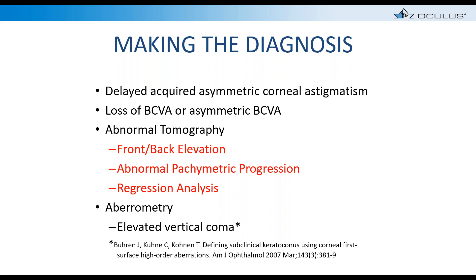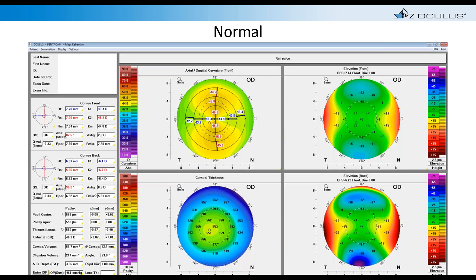Any subtle loss of best-corrected vision or asymmetric best-corrected vision by three letters or more is also a warning sign. When reviewing tomography, compare front and back elevation, look at pachymetric progression — how the cornea thickens from its thinnest point to the limbus — and examine the regression analysis final D value. Vertical coma can also be indicative of early keratoconus.